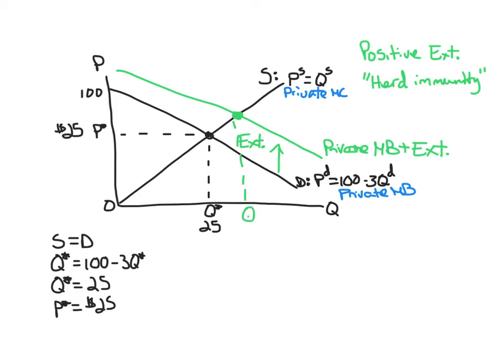So we'll call this Q0 for Q optimal. And at Q optimal, the true marginal benefit is being equated to the marginal cost.